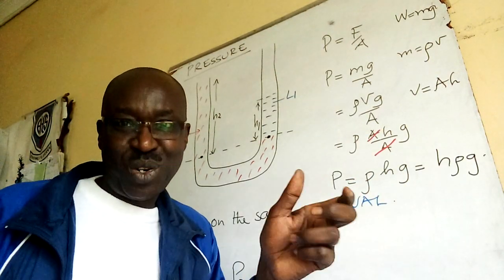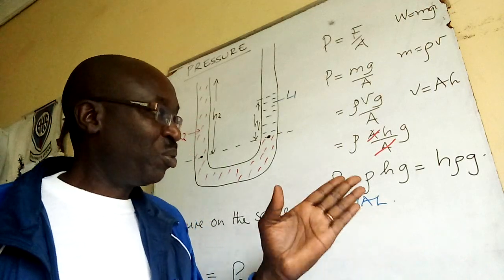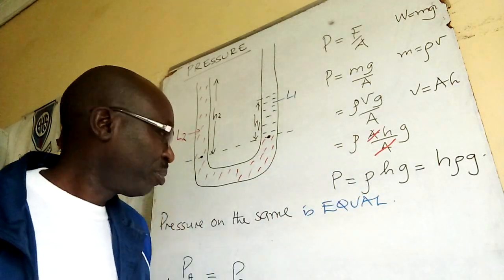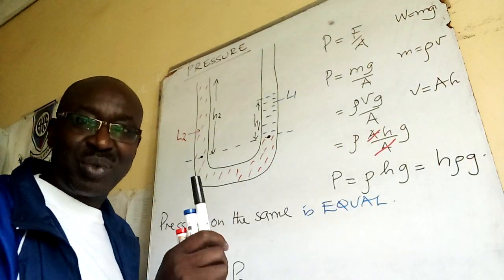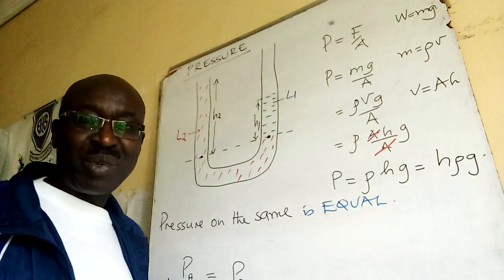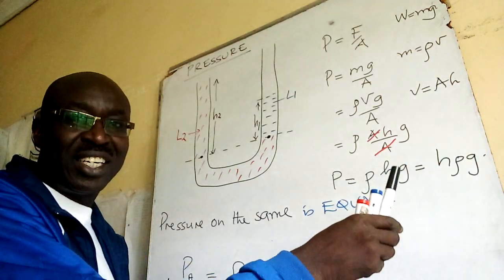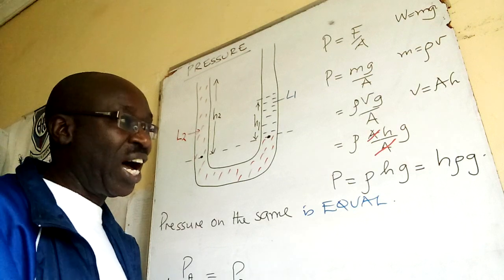So you have pressure is ρ times H times G. But I like Hρg. You may like this, no problem. So this is what we tend to use in liquids because of height, density of liquid, and gravity.